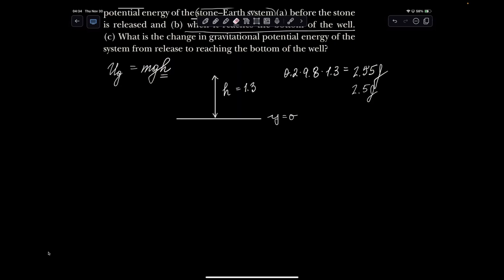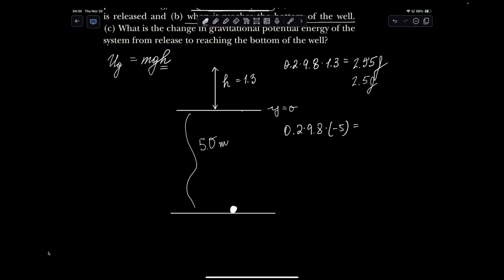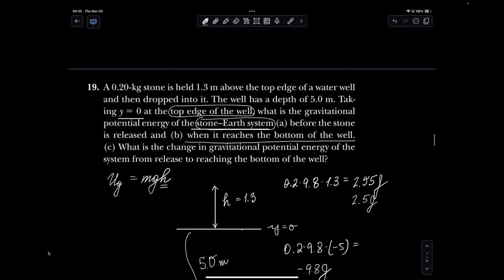Then our stone falls down. I'm not quite drawing it to scale, but this distance right here is said to be 5 meters. 0.2 times 5 is 1, so it's negative 9.8 joules of energy. Again, it's relative to the top edge of the well, not to the ground.